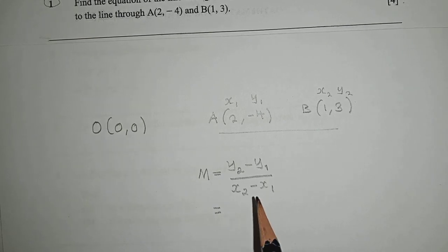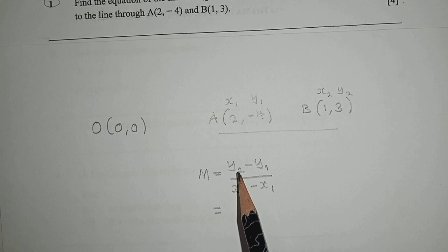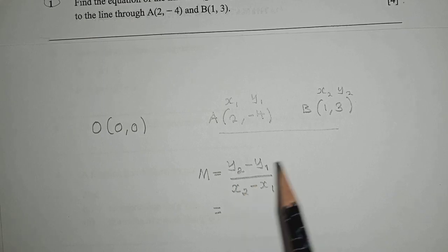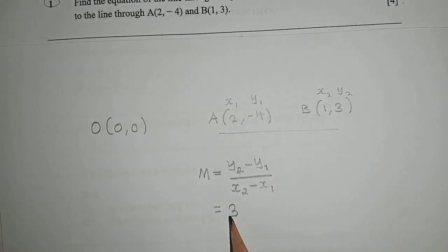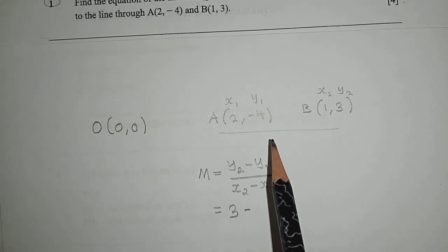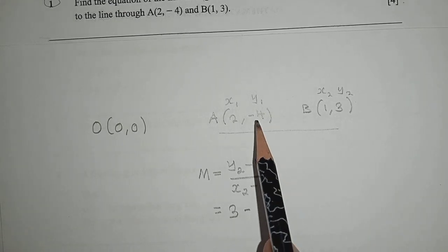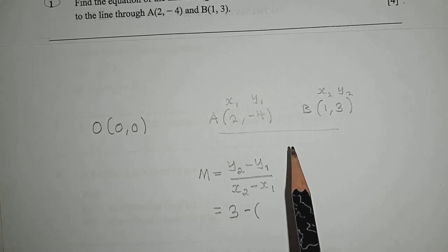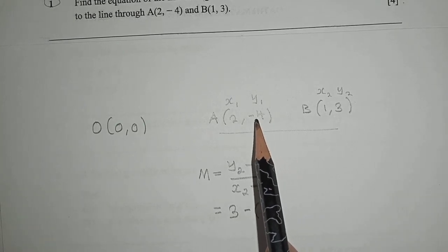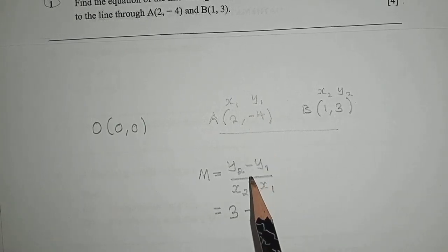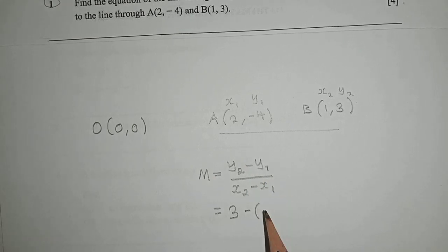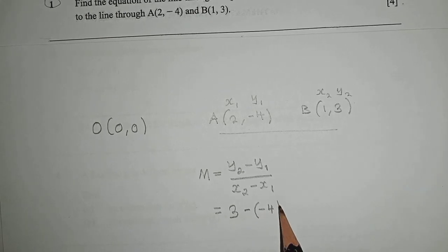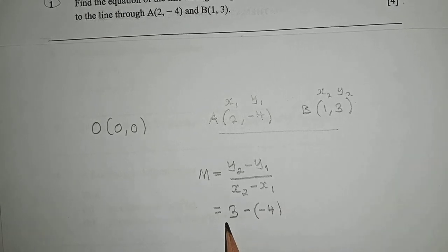Following the points we have, this will be our x1, y1 and x2, y2. Now we plug in the values. Our y subscript 2 is 3 minus y subscript 1 which is -4. Since there is a negative here and a negative in the formula, we put it in brackets.